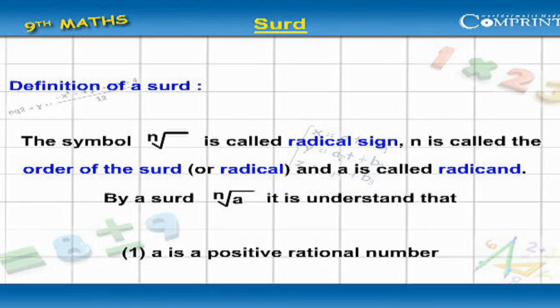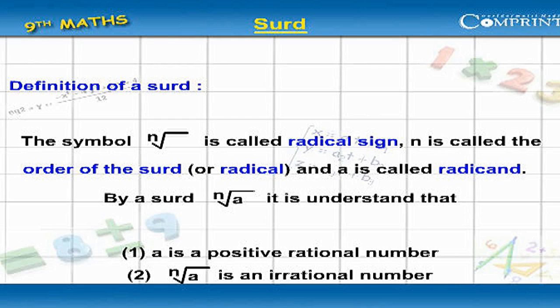The symbol nth root is called the radical sign, n is called the order of the surd or radical, and a is called the radicand. By a surd nth root a, it is understood that a is a positive rational number and nth root a is an irrational number.